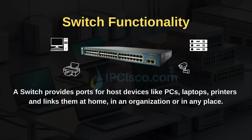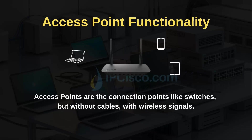Switches provide port density for users and devices. For example, in your company network, PCs, printers, security cameras, and servers can be connected to a switch with cables to build your network. Access points are another common network device. Access points are the connection points like switches, but without cables — they use wireless signals to provide network access within an area, and devices in that area can connect to this network.